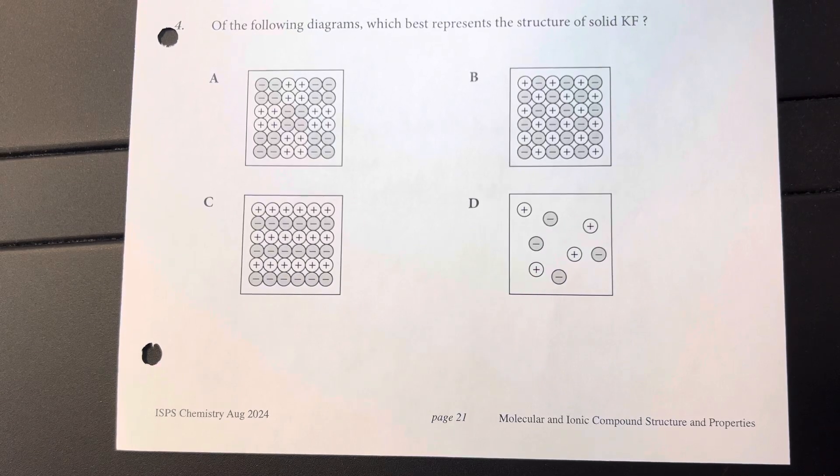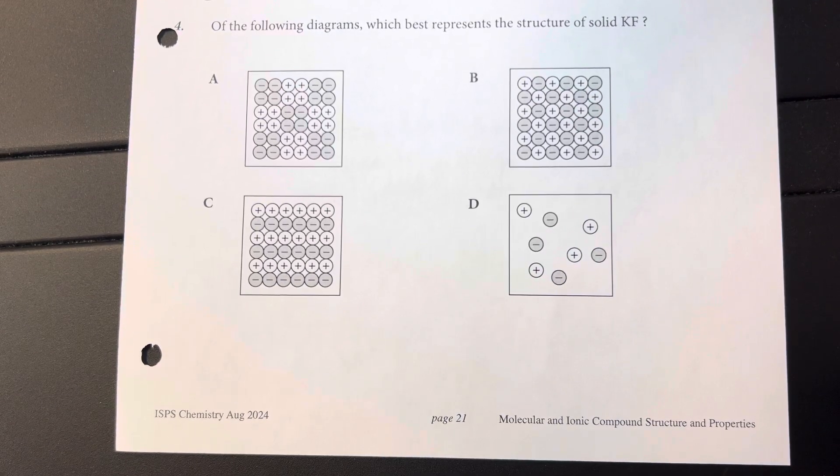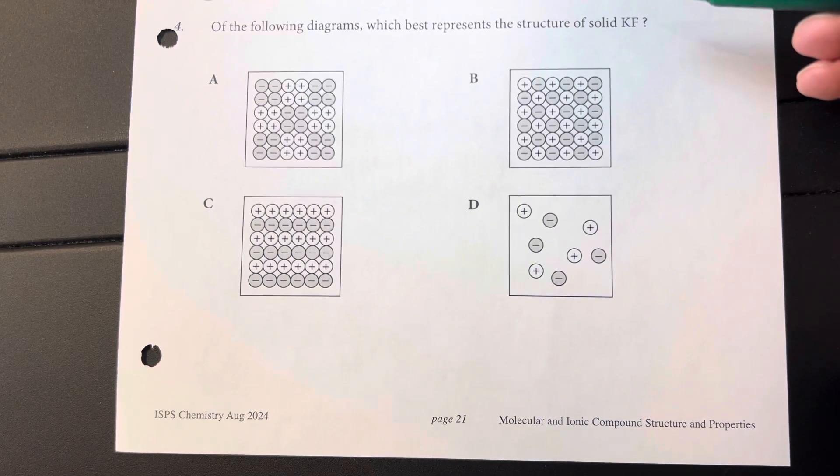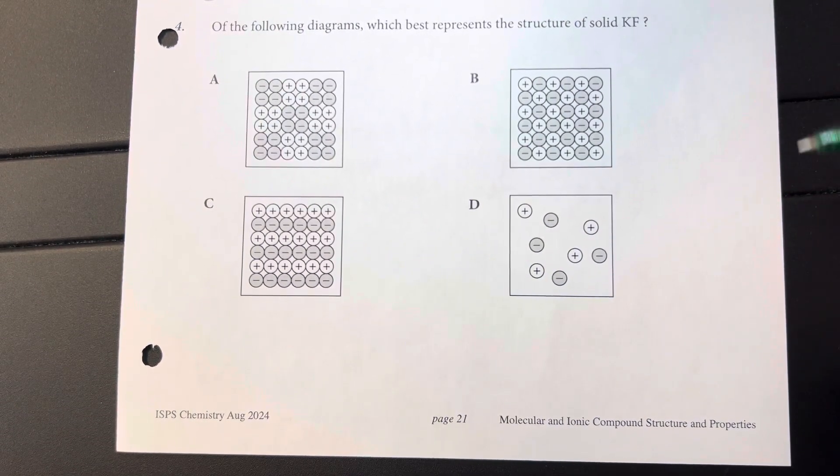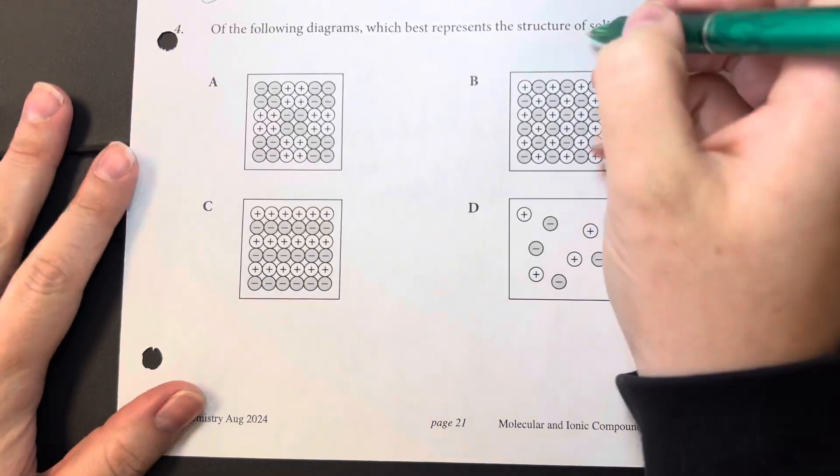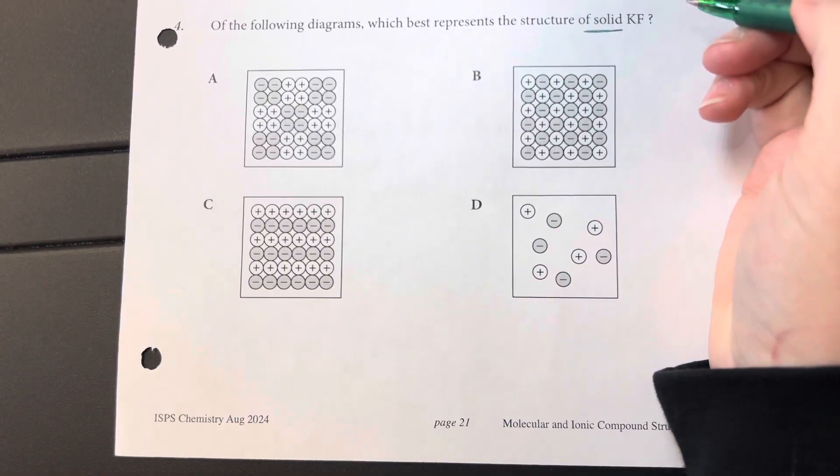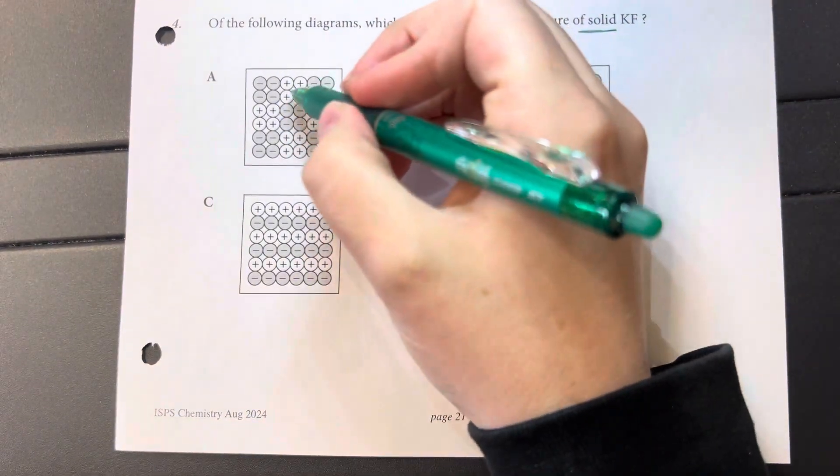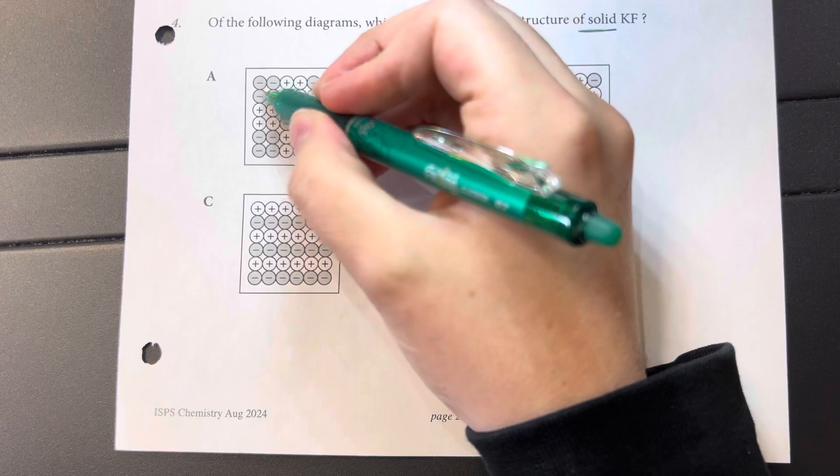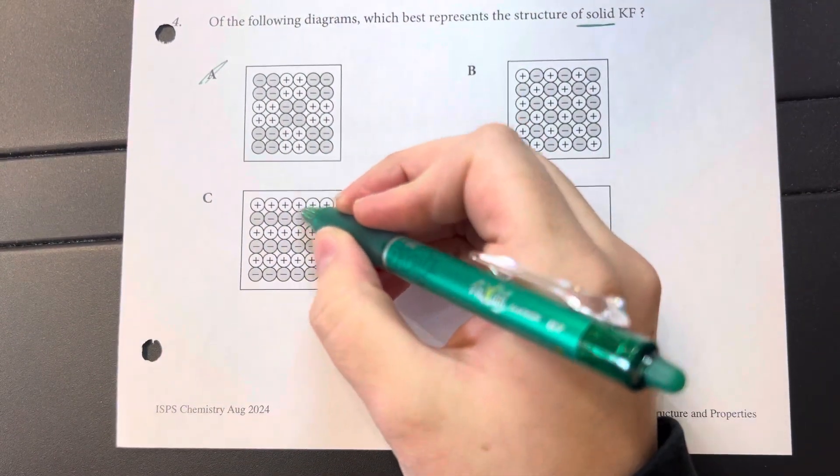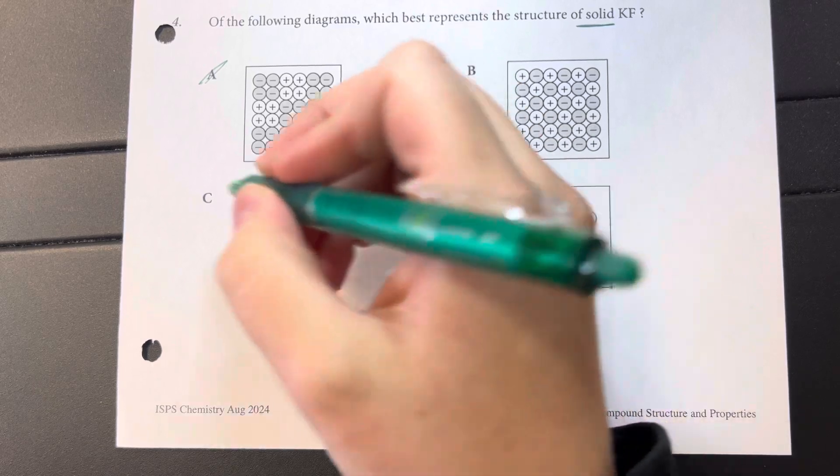Of the following diagrams, which best represents a solid of potassium fluoride? I'm looking for a natural distribution between cations and anions. And then again, this is a solid, so I should have a set routine shape. This is unnatural. I have cations touching cations, anions touching anions. Same thing here. I have cations touching cations, anions touching anions.